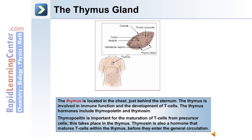The thymus gland is located in the chest just behind the sternum. It's involved in immune function and the development and maturation of T-cells. The thymus hormones include thymopoietin and thymosin. Thymopoietin is important for the maturation of T-cells from precursor cells, while thymosin also matures T-cells within the thymus before they enter the general circulation.